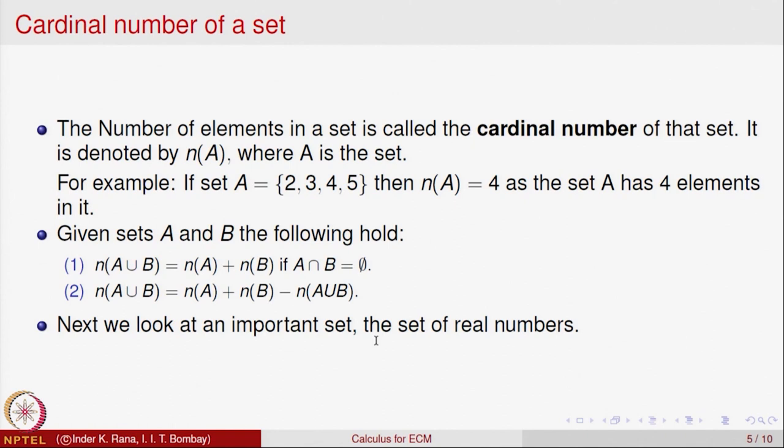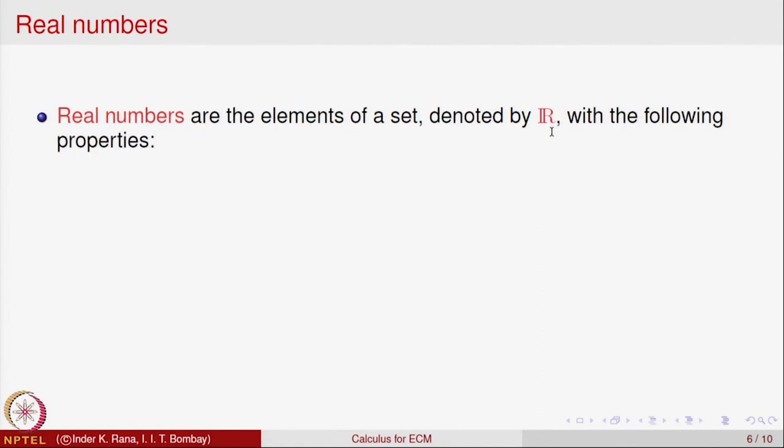Next, we are going to describe a very important set which is going to play a fundamental role in our subject — that is the set of real numbers. What is a real number is not easy to describe completely. We will treat real numbers as a set with certain properties. Real numbers are the elements of a set denoted by script R — the English alphabet R with an additional line on the side to indicate it is a special set, the set of all real numbers.